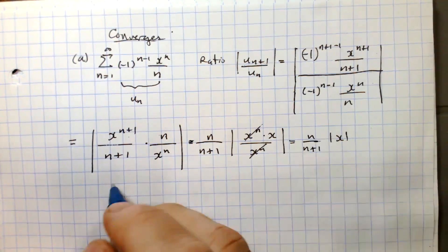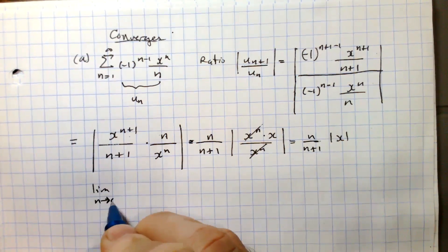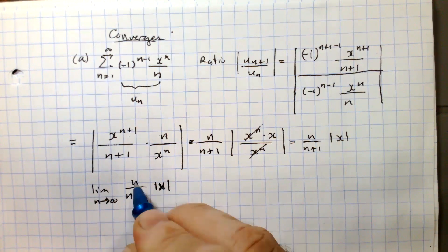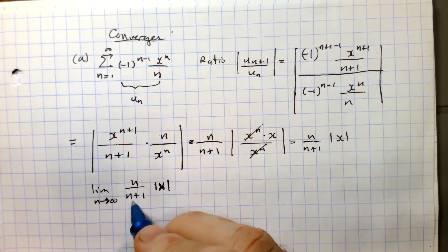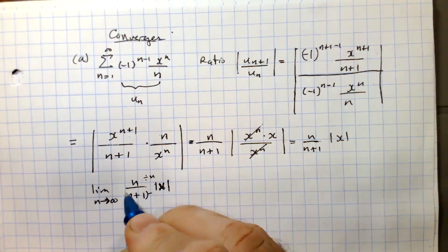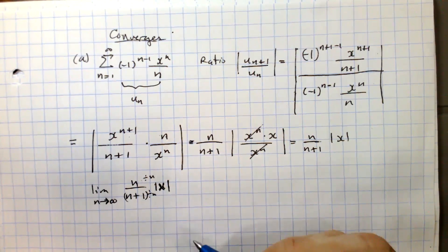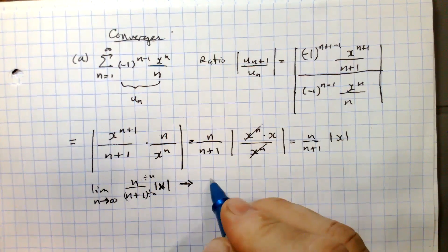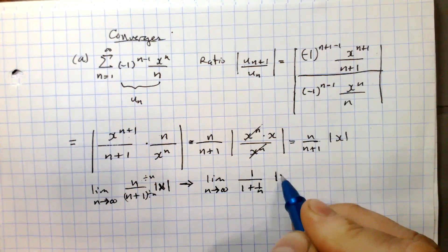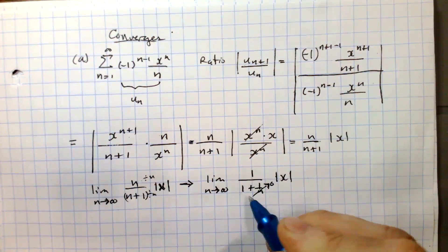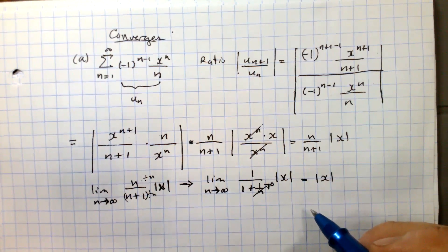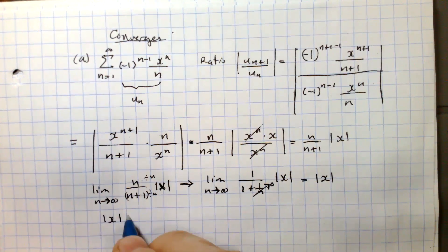Taking the limit as n goes to infinity of n over (n+1) times |x|: dividing numerator and denominator by n gives 1 over (1 + 1/n) times |x|. As n→∞, the 1/n term goes to 0, leaving just 1. So the limit equals |x|. By the ratio test, the series converges absolutely for |x| < 1.